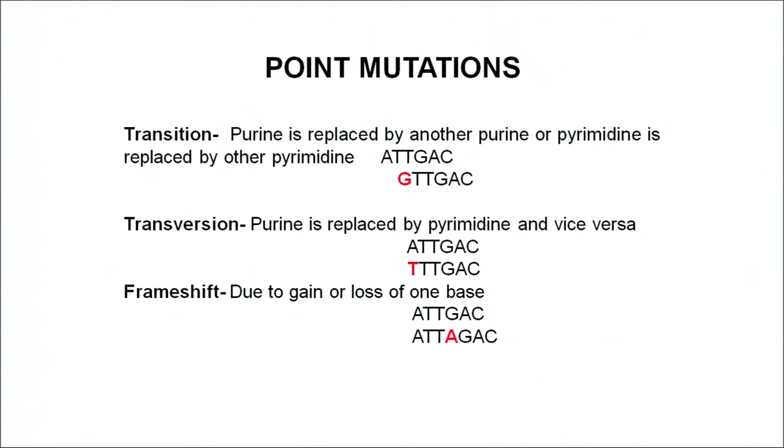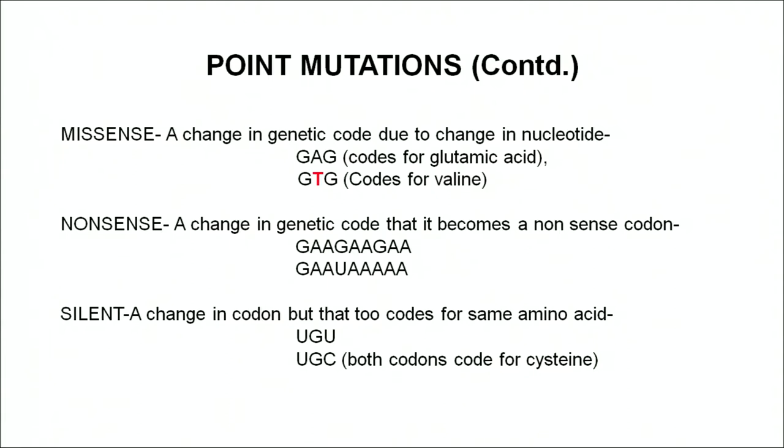Frame shift mutation occurs when one additional base is added into the DNA molecule. For example, if the sequence A-T-T-G-A-C is mutated to A-T-T-A-G-A-C with an extra A inserted, the reading frame shifts - the genetic code will now be read as A-T-T then A-G-A instead of G-A-C, completely changing the codons. Missense mutation is when a change in a nucleotide causes the code to specify a different amino acid - for example, G-A-G codes for glutamic acid, but G-T-G codes for valine instead.